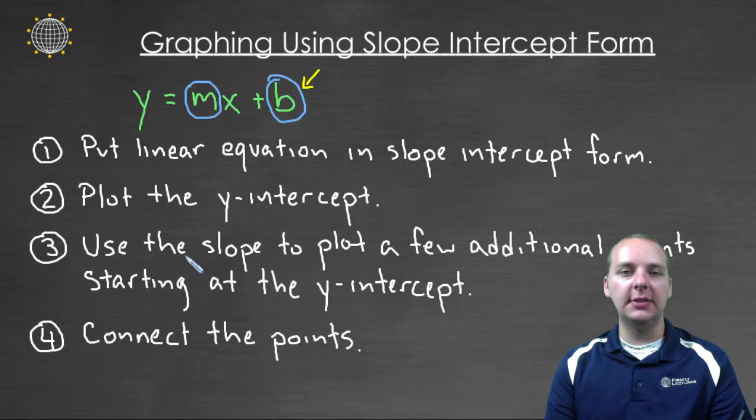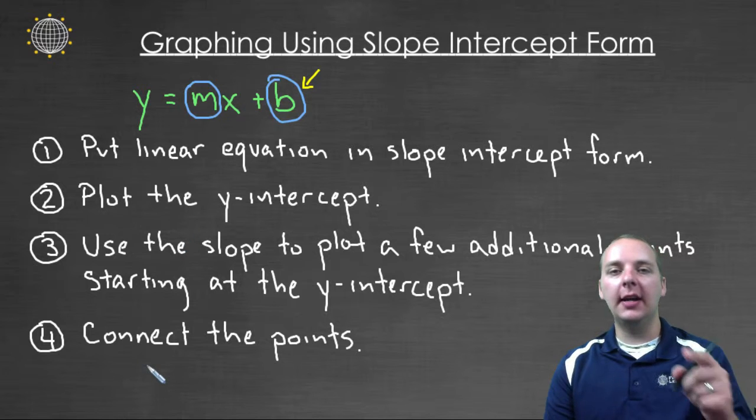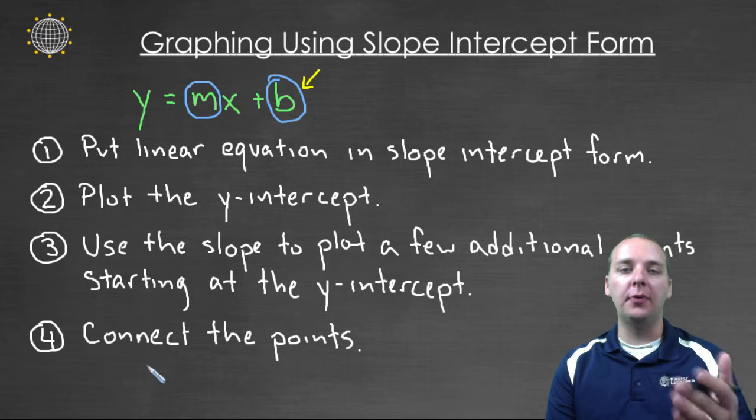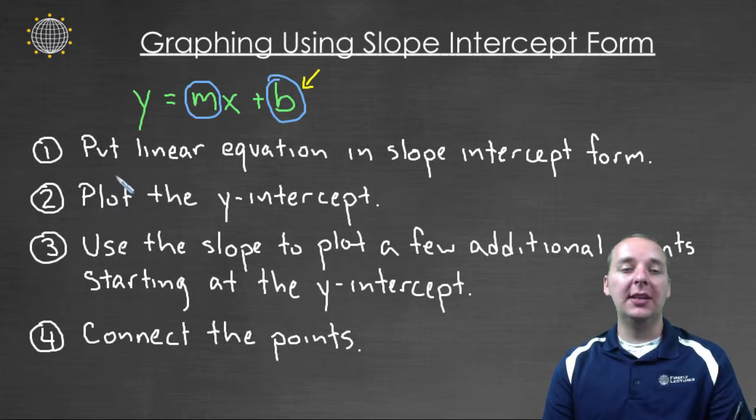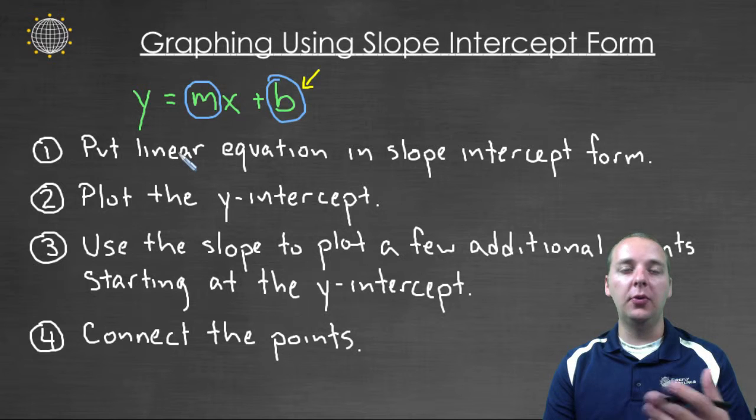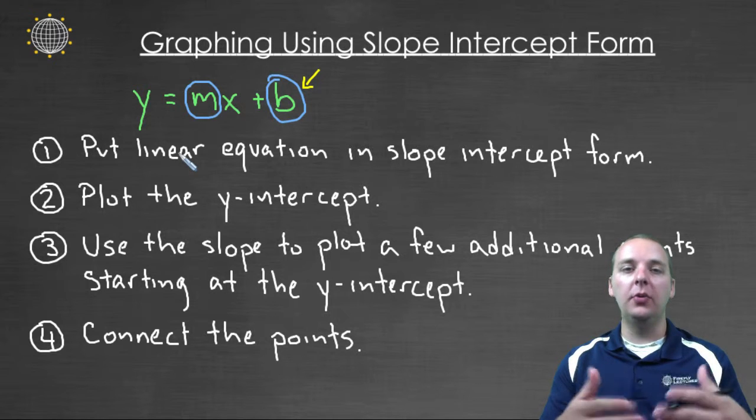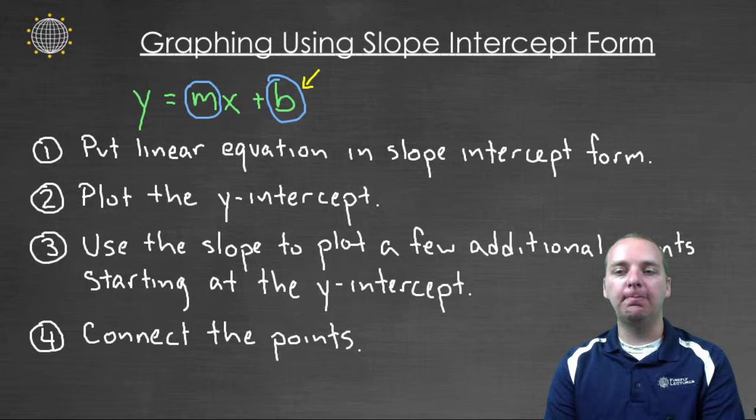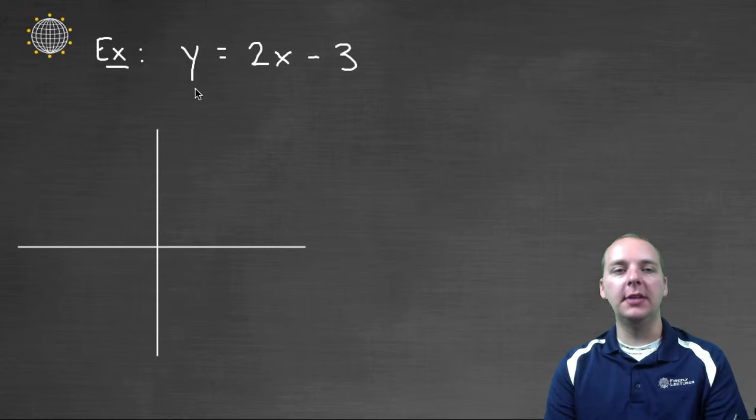And then the last step is a simple one, number four. Just connect the points that you've plotted with a line, and then that line is the graph of your linear equation. So these are really fast. There's not even a lot of writing to do. If you remember when we graphed using x, y tables, or x and y intercepts with the test points, there was a lot of writing that was involved. But these require very little writing.